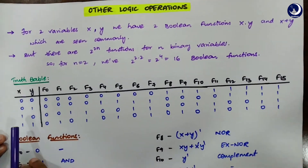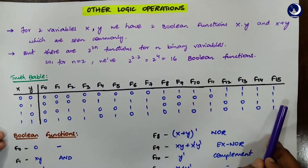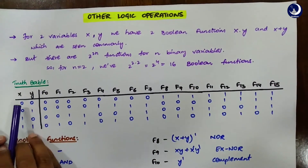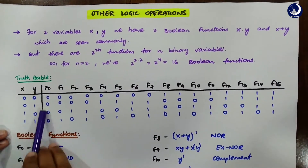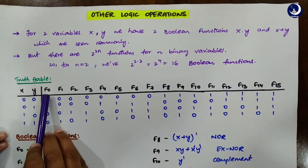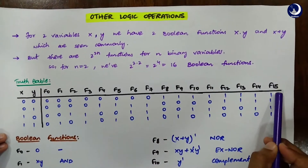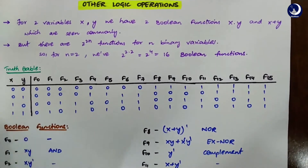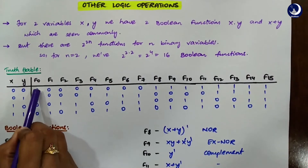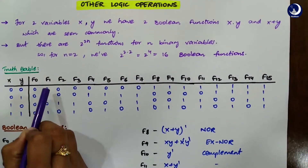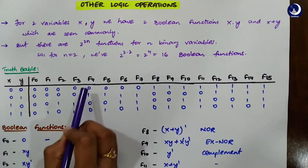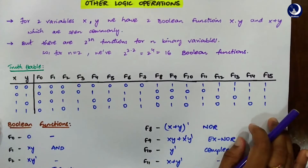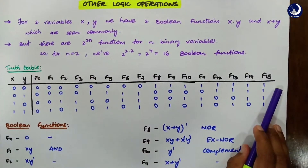You can see the truth table — I have drawn it in a very lengthy fashion, so don't get confused. For x and y, we have four input combinations. The values f0 to f15 are written from the downward to the upward direction. For f0 it is 0,0,0,0; for f1 it is 0,0,0,1; for f2 it is 0,0,1,0; for f3 it is 0,0,1,1 — and like this it goes on. In this way I have filled the entire table.